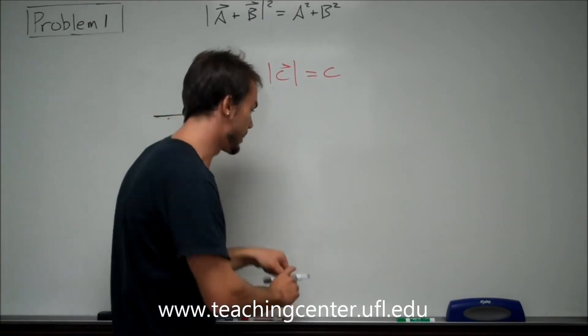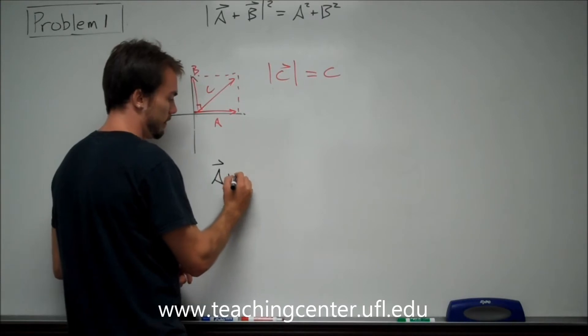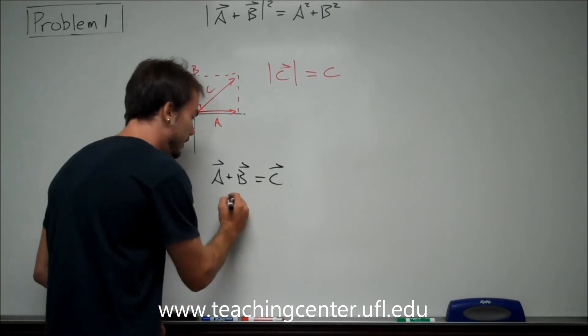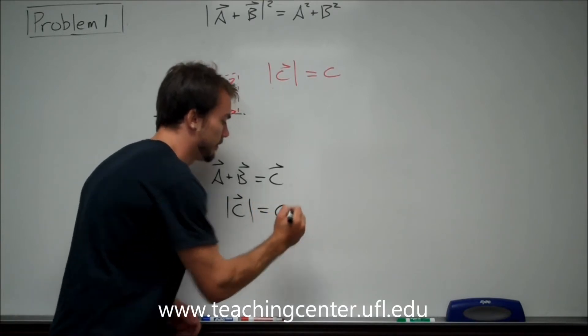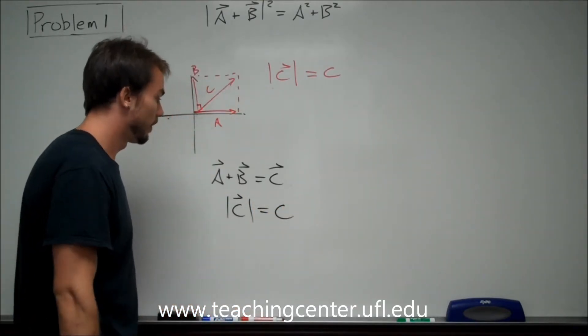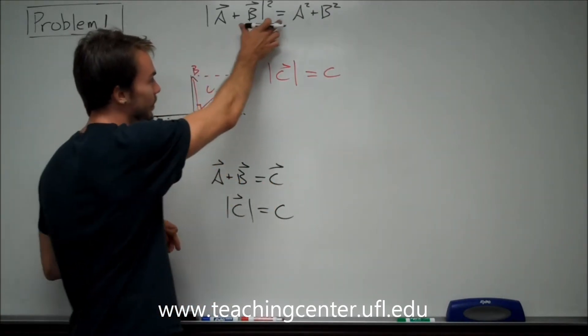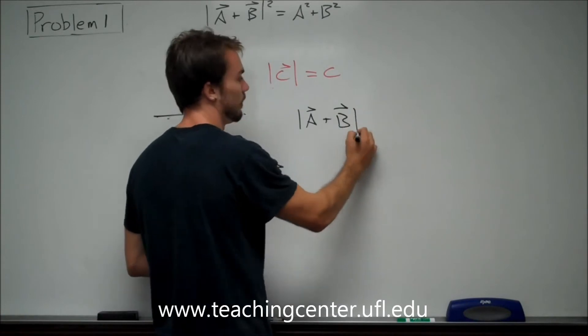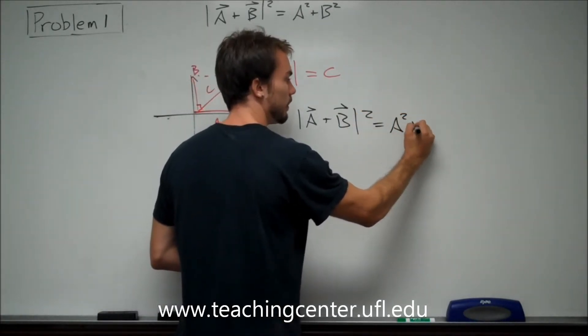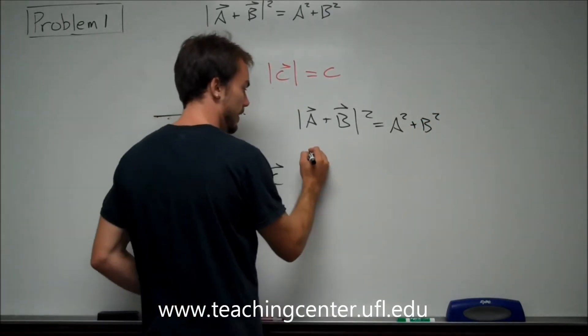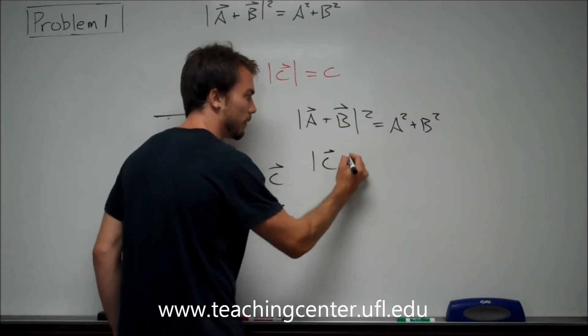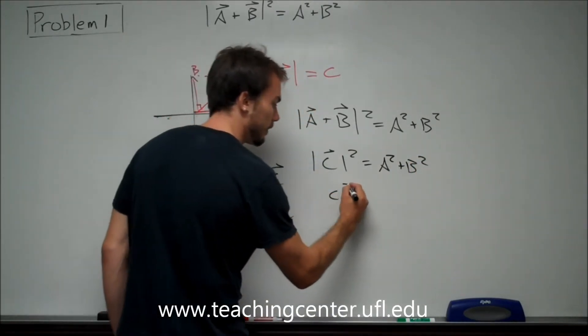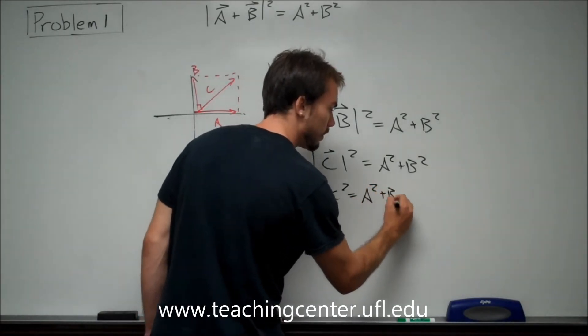What we can say is vector A plus vector B, if they're 90 degrees to one another, must equal vector C. We can say that the magnitude of vector C just gives us the magnitude C. So if this equals this and this equals this, basically what we can do is do some little substitutions. We can say vector A plus vector B if they're 90 degrees equals that, and we can substitute this in for that.